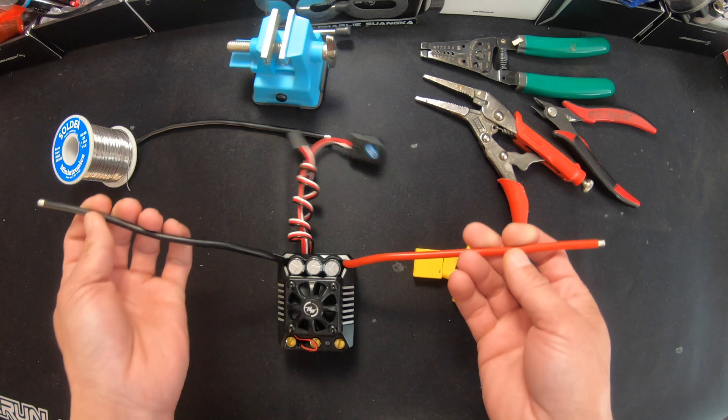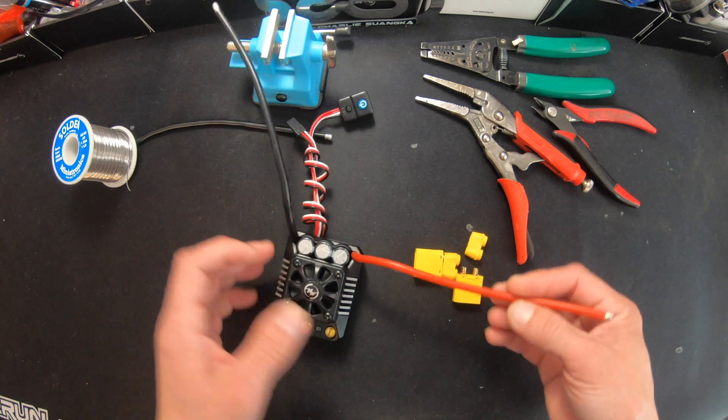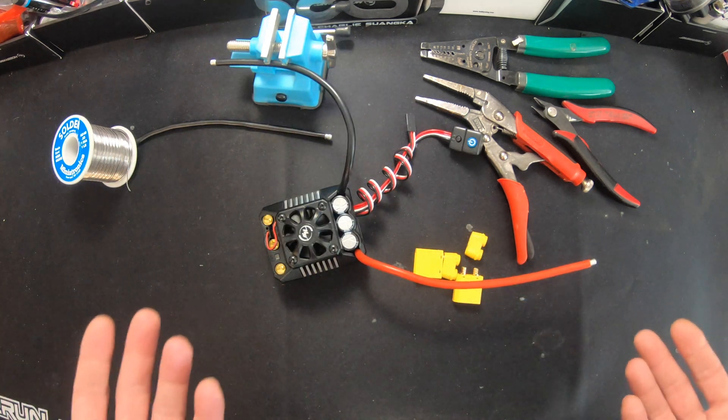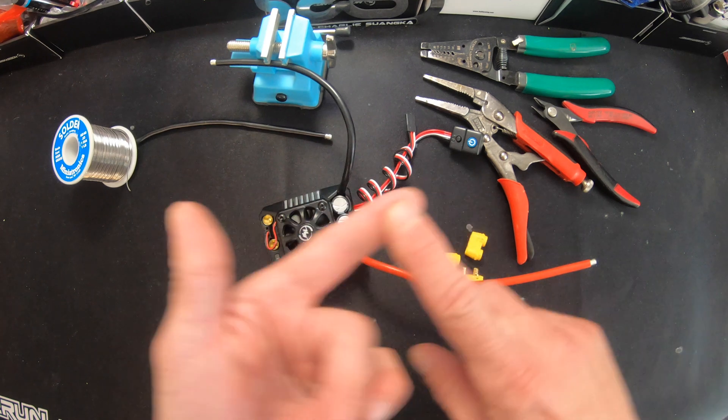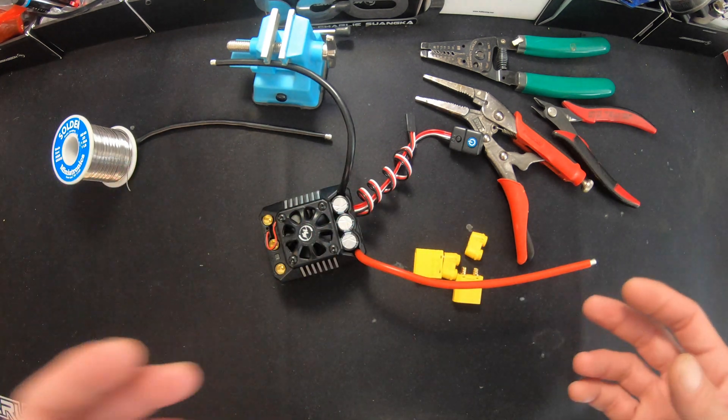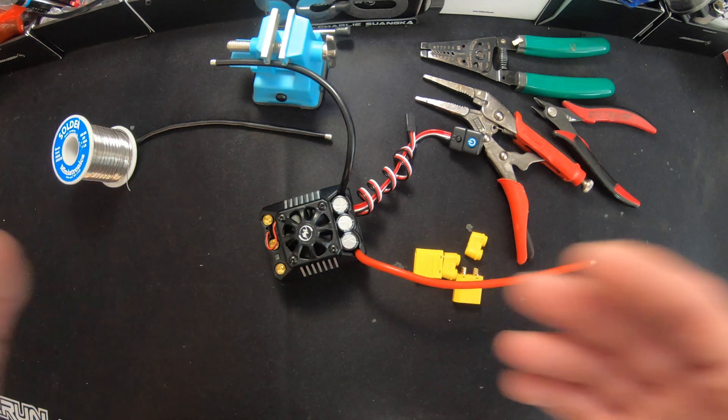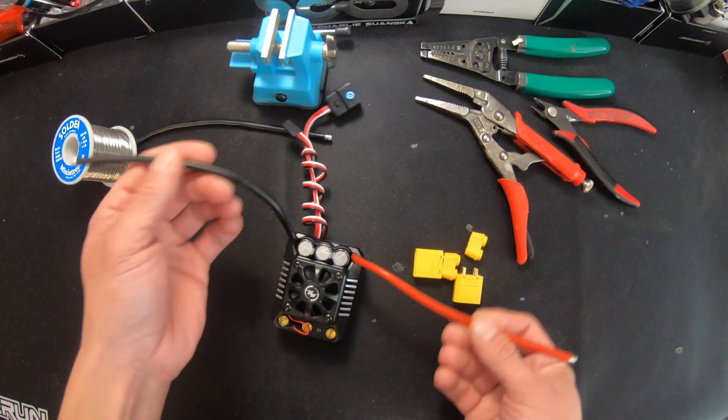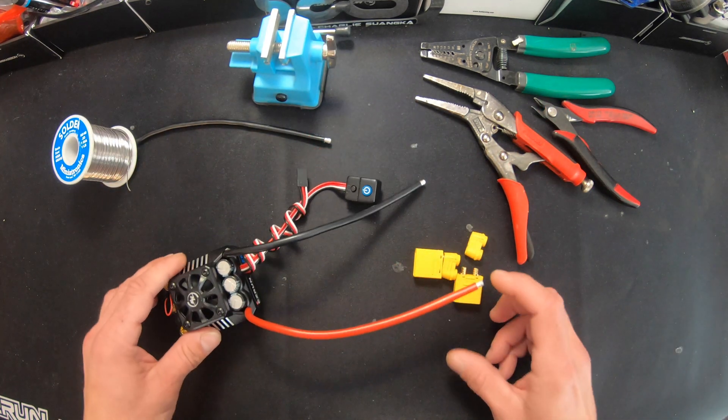Some speed controls come with their plugs installed. Some do not. For a lot of the monster trucks, they're set up for dual battery packs. Let's say you have two 2-cells you want to run as 4-cells, or two 3-cells that you want to make into a 6-cell. You can do that by having two plugs on the speed control and we're going to go through all that right now.